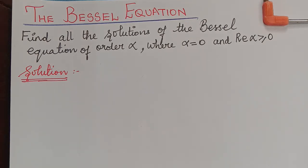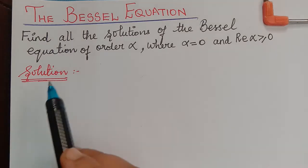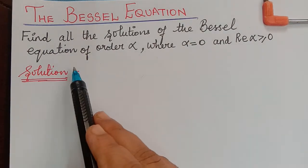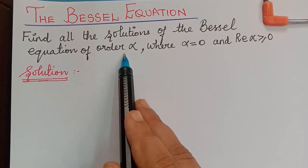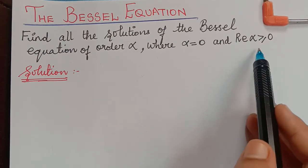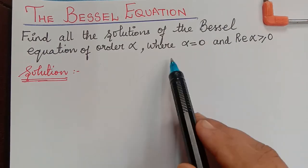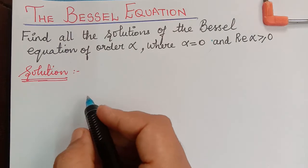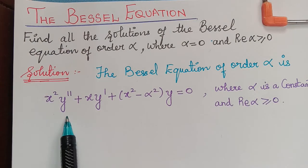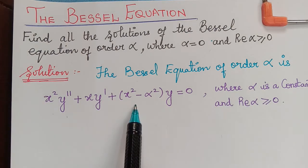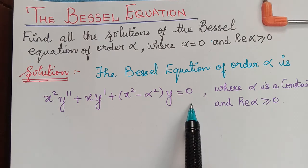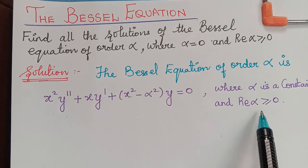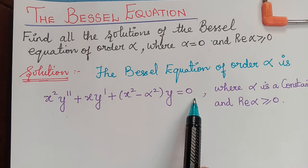Dear students, in this video we shall learn about the Bessel equation, which is one of the significant topics under linear equations with regular singular points. Here we have to find all the solutions of the Bessel equation of order alpha, where alpha is a constant and the real part of alpha is greater than or equal to 0. In particular, we are going to find the solution when alpha is equal to 0. The Bessel equation of order alpha is given by x squared y double dash plus x y dash plus x squared minus alpha squared times y equals 0.